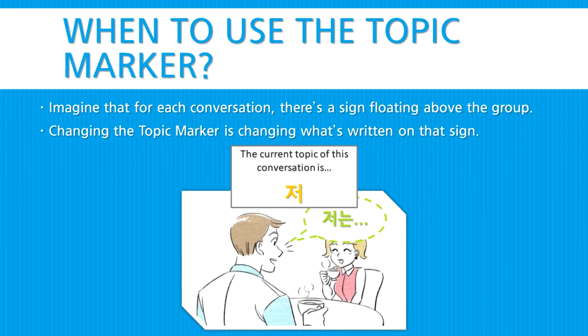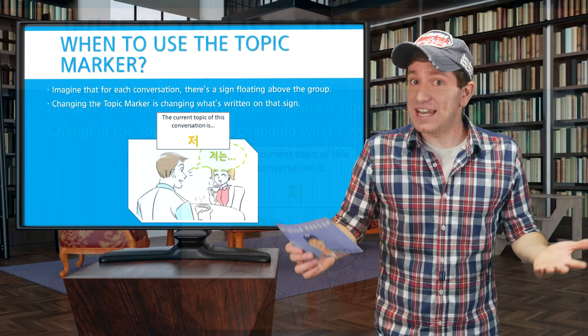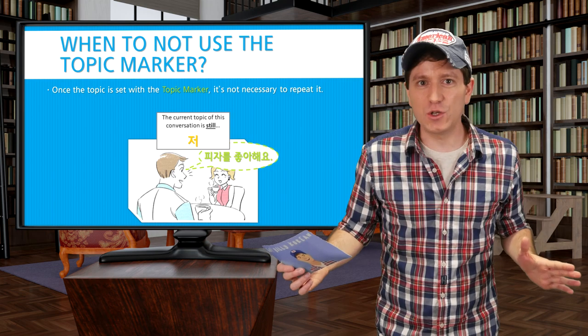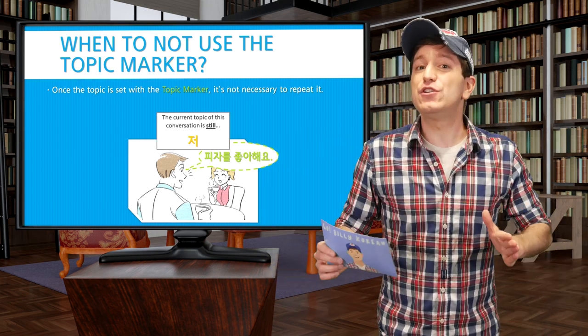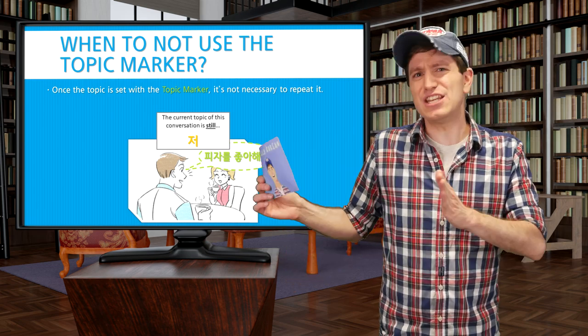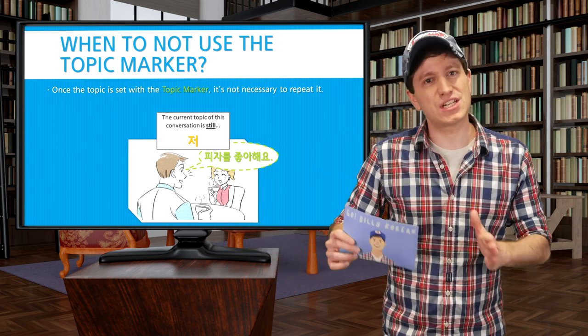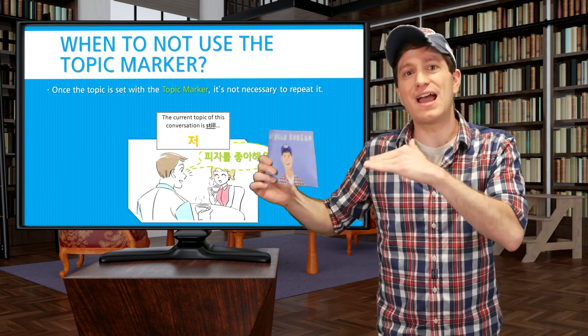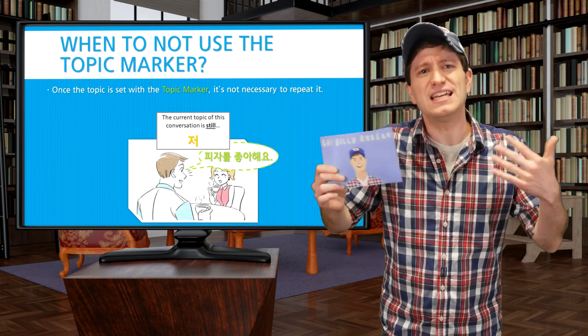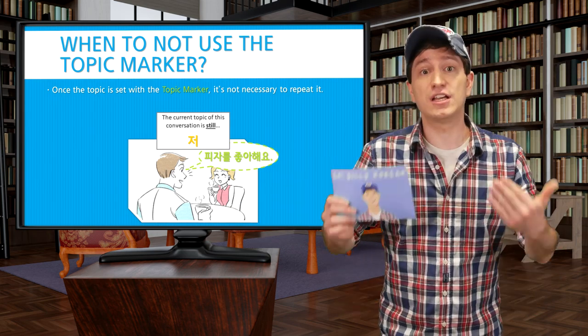So changing the topic marker is changing what's written on that sign, and tells everyone that the current topic of this conversation is whatever I'm talking about. So then do you need to use the topic marker every time you want to change the topic? Yes, you will. But if you're not changing the topic, then you do not want to repeat the topic marker. It's not necessary to say 저는, 저는 for every sentence when you've already established that you're talking about 저.